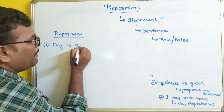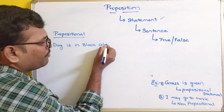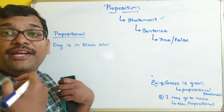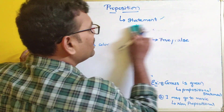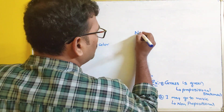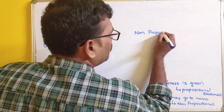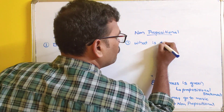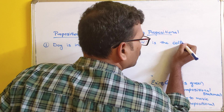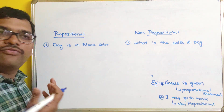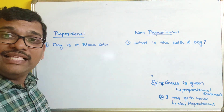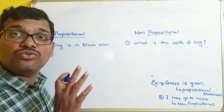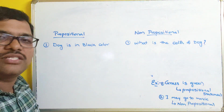Another example: 'Dog is in black color.' This will be a propositional statement because either it may be true or false — so this comes under the propositional statement. Then what will be a non-propositional statement? 'What is the color of dog?' — this is not a statement, it is a question. We are asking something, and it doesn't give a result as either true or false, so this comes under the non-propositional statement.